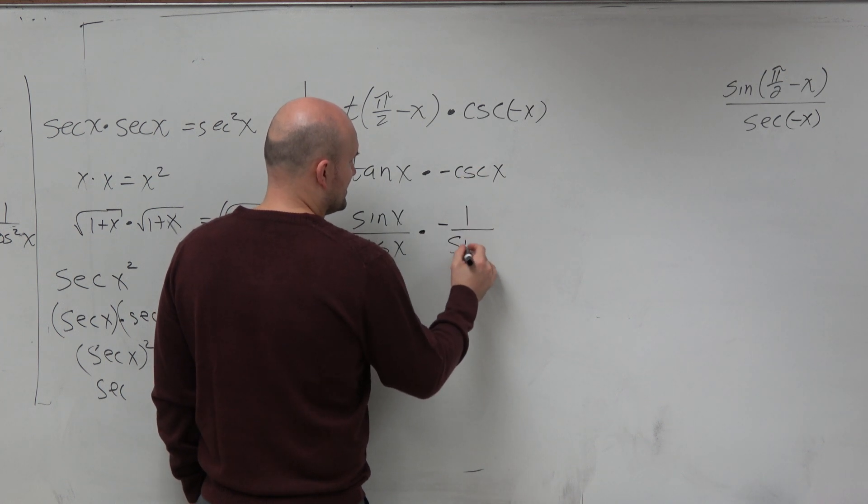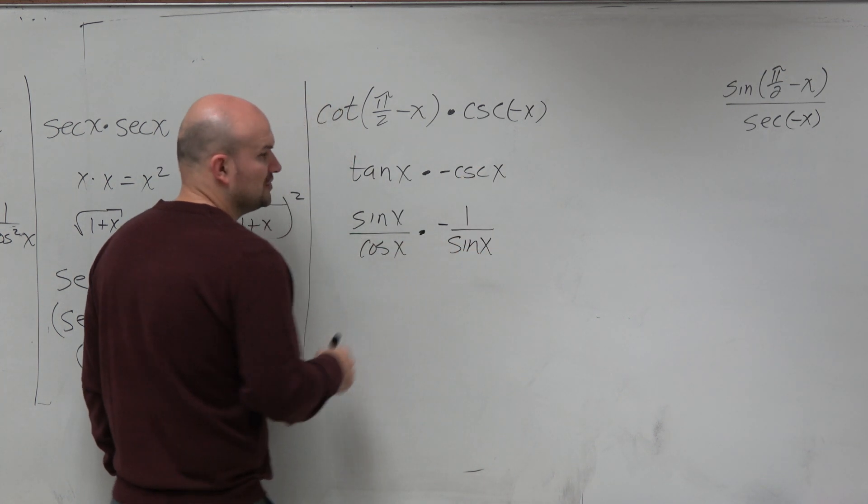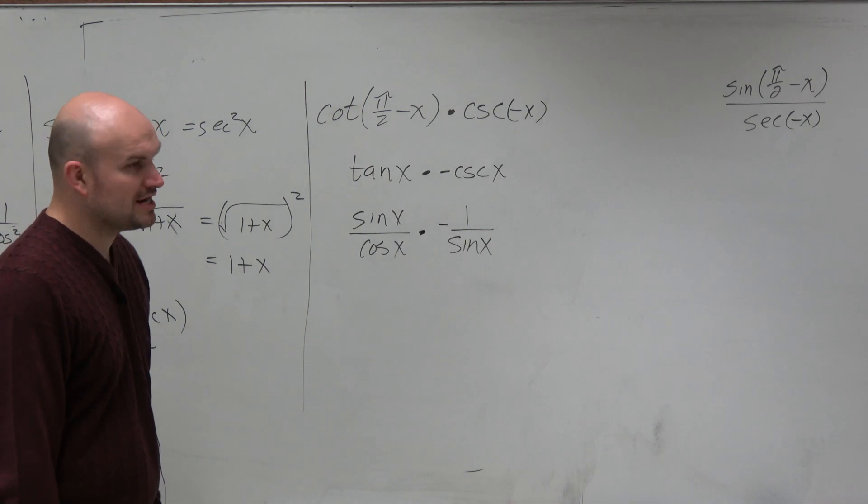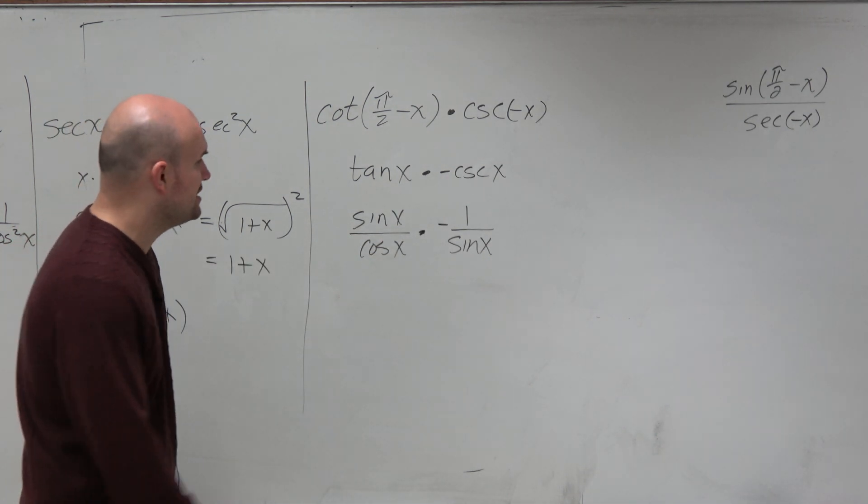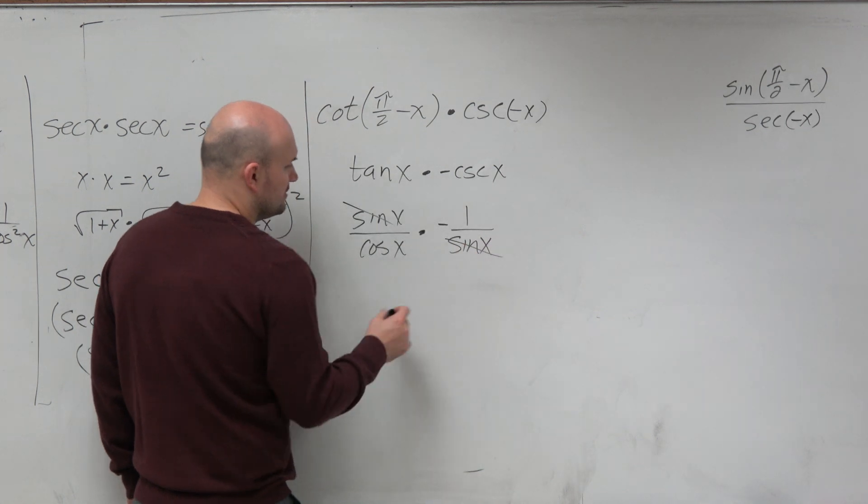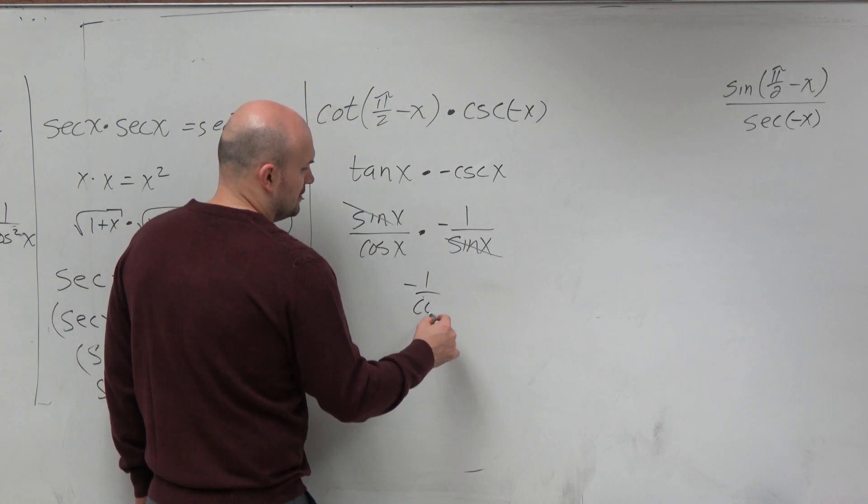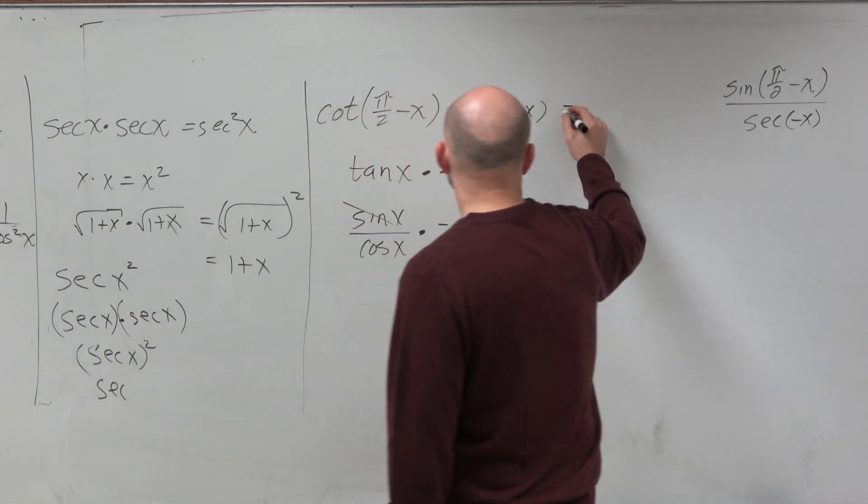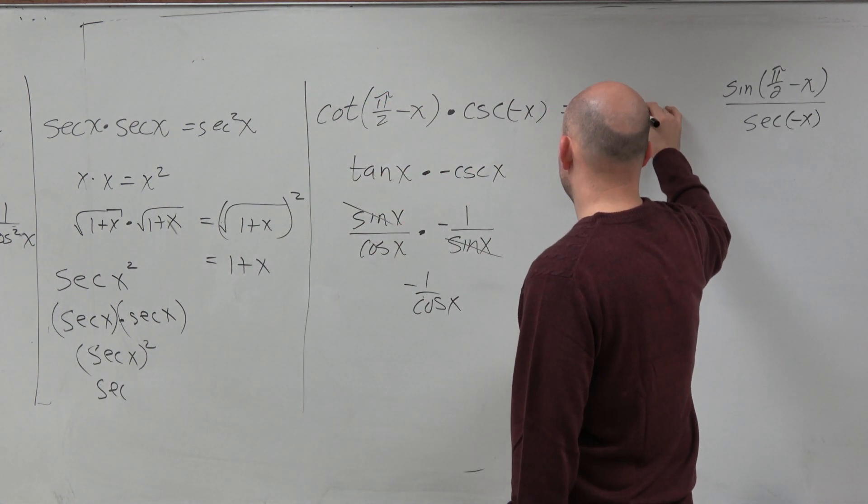And if I rewrote this as 1 over sine of x. And now I'm multiplying a fraction times a fraction. And what do we know about when we multiply fractions times fractions? You have everything separated by multiplication. So therefore, we can apply the division property. And therefore, this is just equal to negative secant of x.